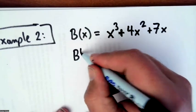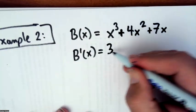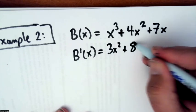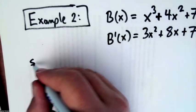Now let's take the derivative of this and I'm getting 3x squared plus 8x plus 7. Now let's solve this.